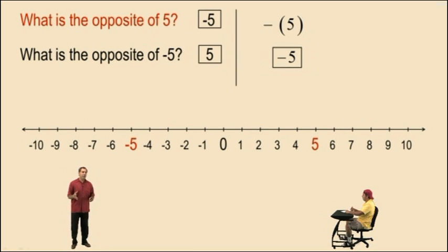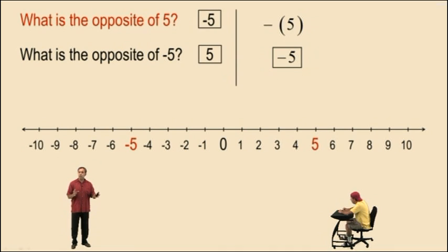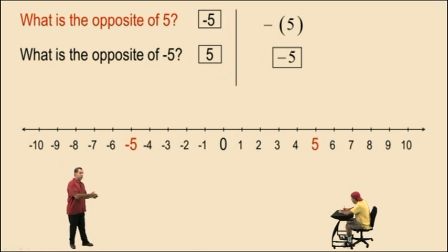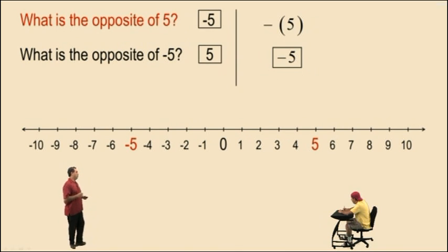Later in the semester, we will find out that to mathematically calculate the opposite, you multiply a number by negative 1. So negative 1 times positive 5 is negative 5. That is why a negative times a positive is negative — because opposites of positive numbers are always negative.